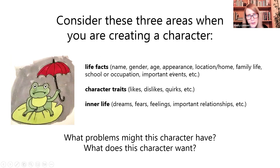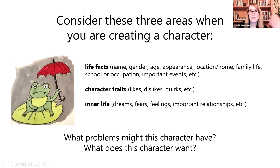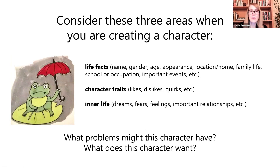So why do we want to go to all this trouble of thinking through these things about a character? Because that might lead you to a story. Think about this character — what kinds of problems might this character have? Remember, we need conflict or problems, obstacles, if we're going to have a story. If you know the character, then you might have a better idea of what kinds of problems that character might have, and that could be the starting point. Another way to frame this: what does this character want more than anything, and what is keeping this character from getting what they want?